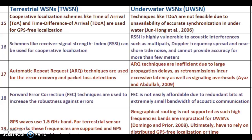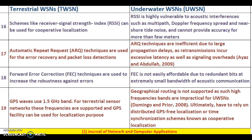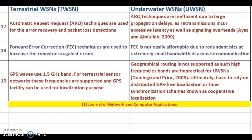Point 18: In TWSN, Forward Error Correction (FEC) techniques are used to increase robustness against errors. In UWSN, FEC is not easily affordable due to the redundant bits required and the extremely small bandwidth of acoustic communication. Point 19: In TWSN, GPS uses the 1.5 GHz band, these frequencies are supported, and GPS can be used for localization. In UWSN, geographical routing is not supported, as high frequency bands are impractical. Ultimately, UWSN must rely on distributed GPS-free localization or time synchronization schemes known as cooperative localization.